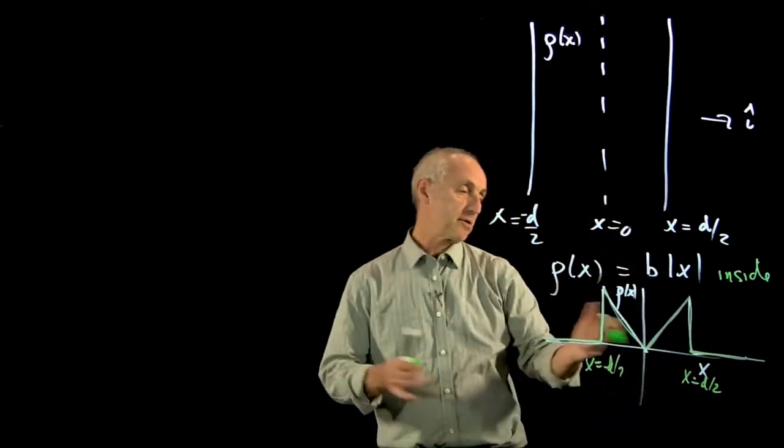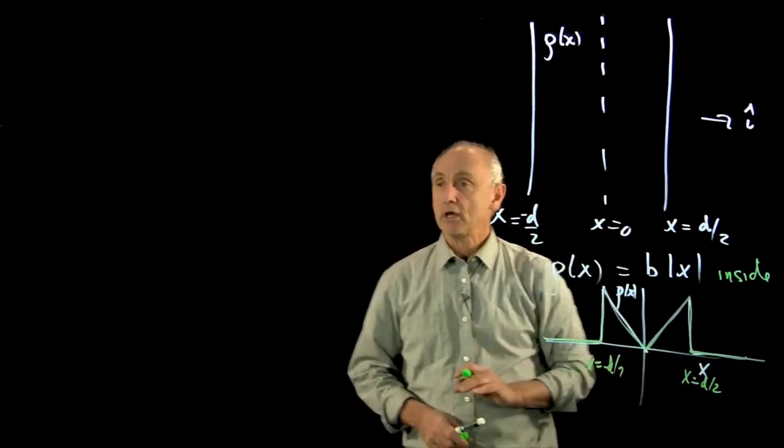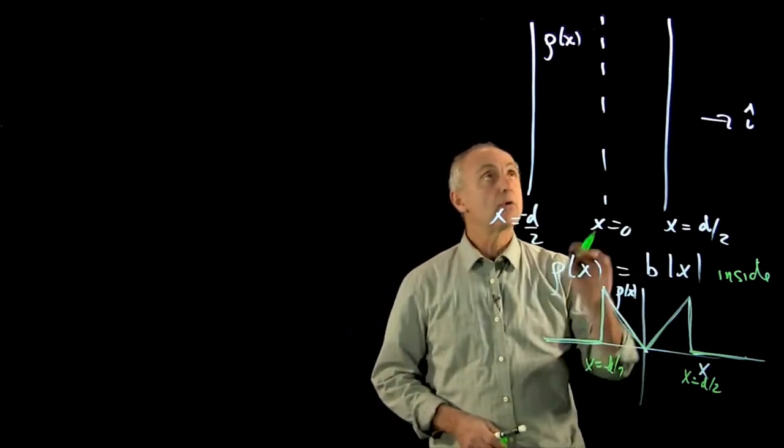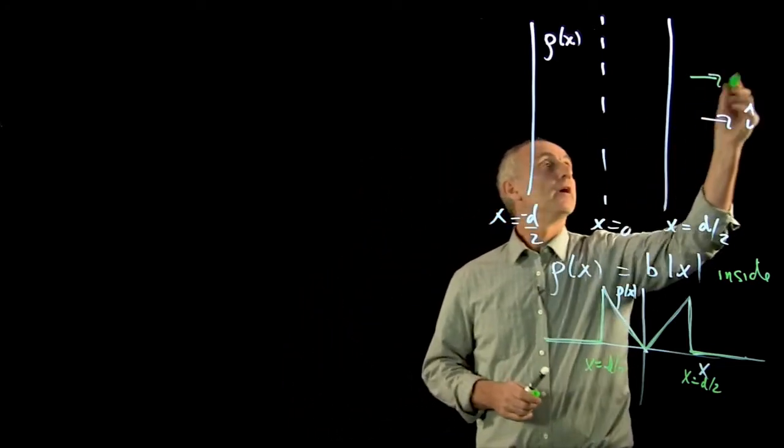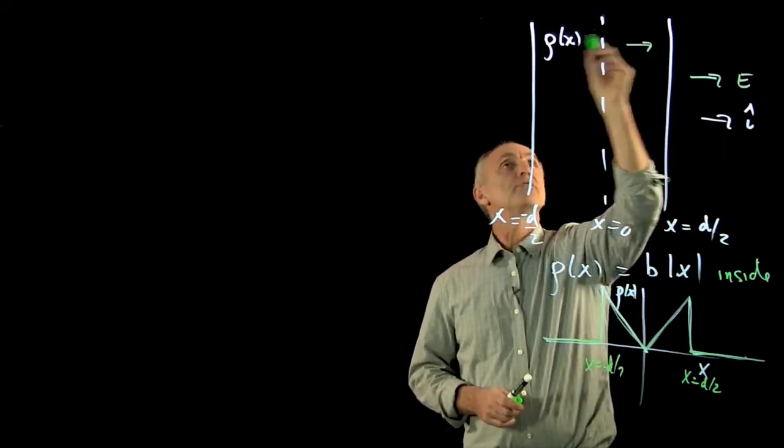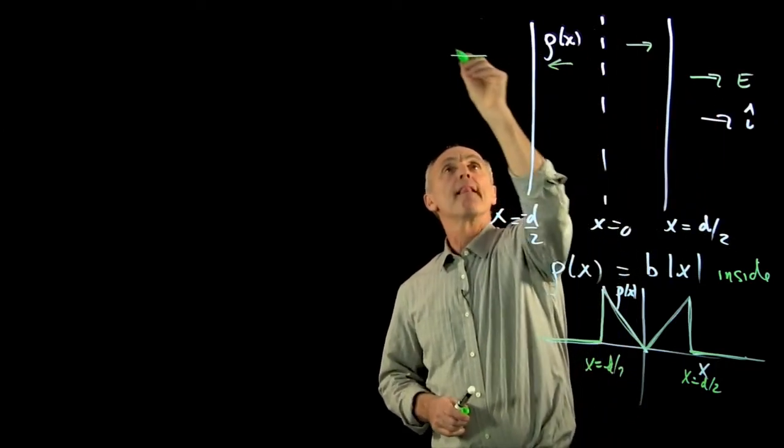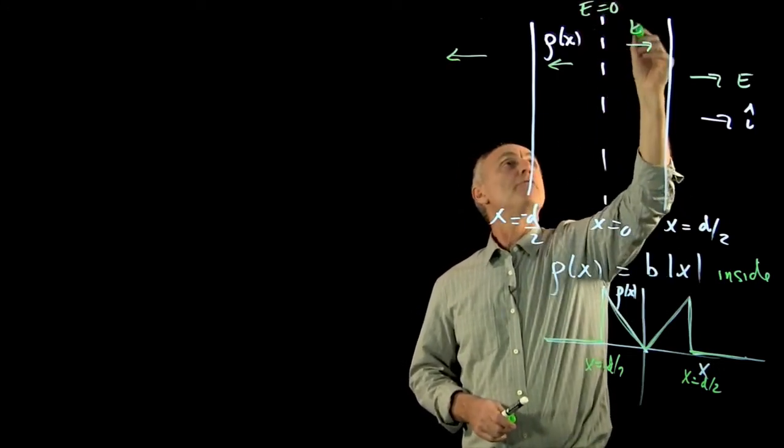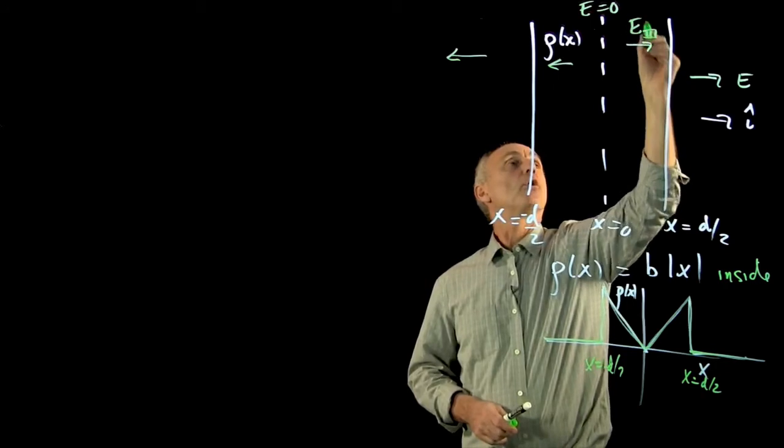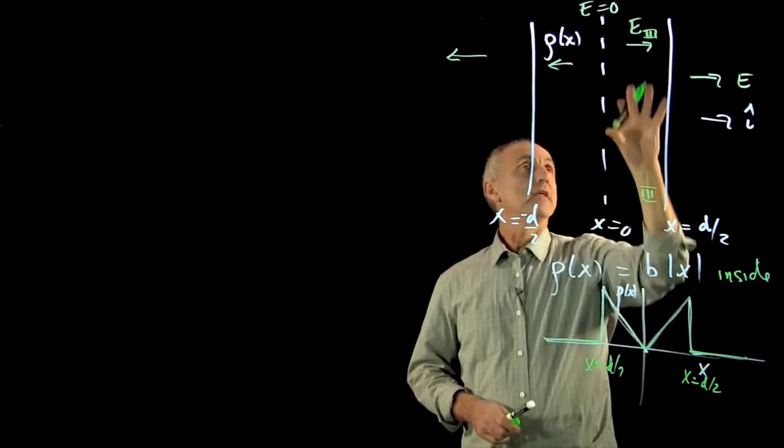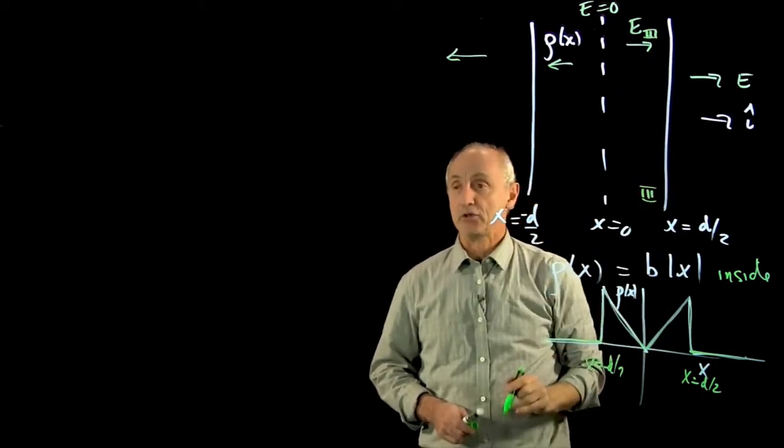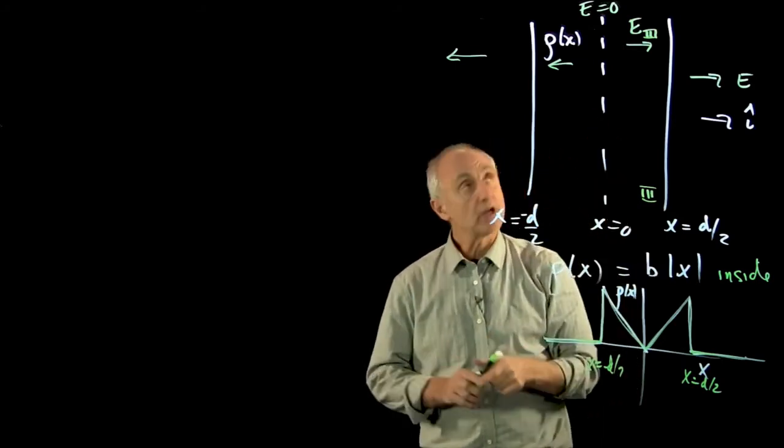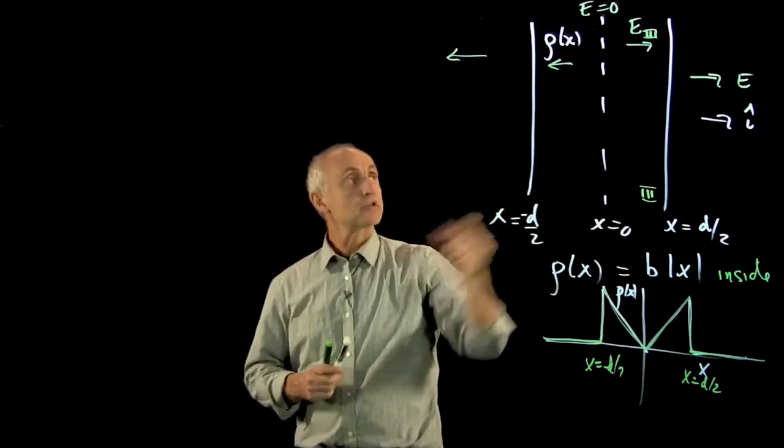So this charge distribution will give us a more complicated field inside. Now remember, by symmetry, electric fields point away from the slab, and e is 0 at the center. And I want to focus on what we call region 3, the electric field for the positive value of x. Now I know that e is 0 in the center. So that's my picture.